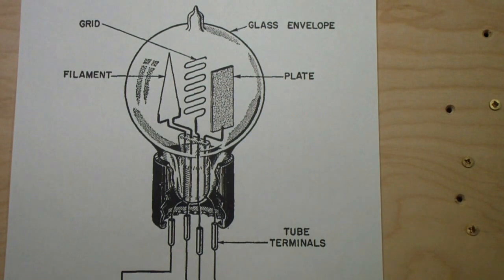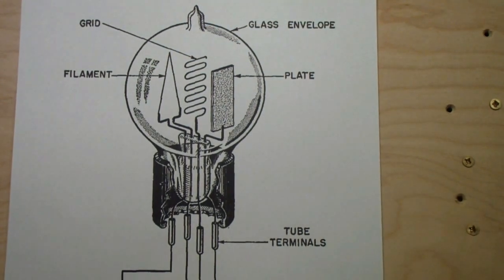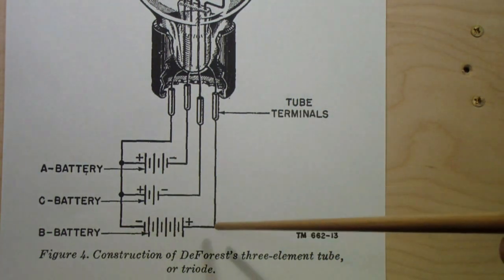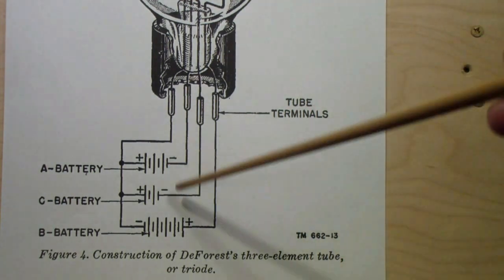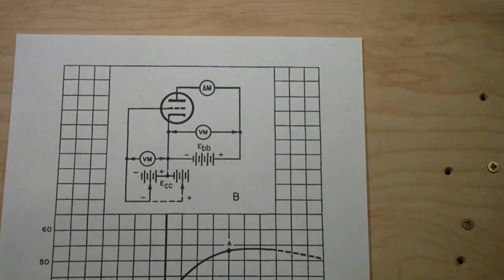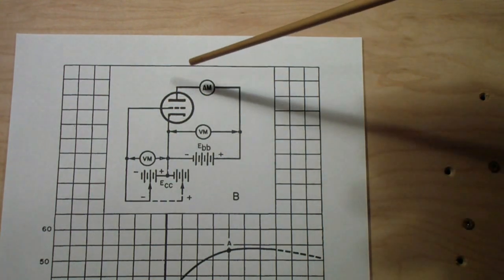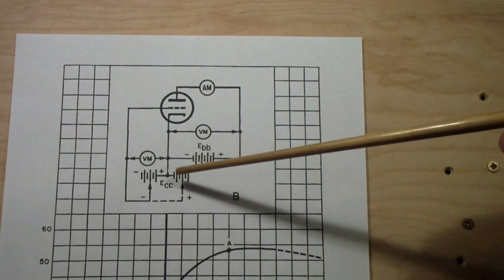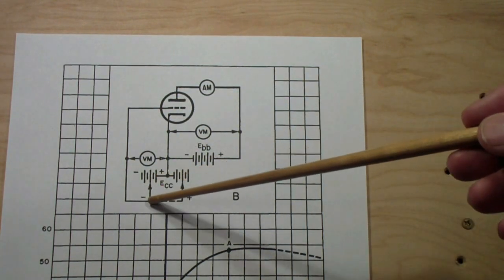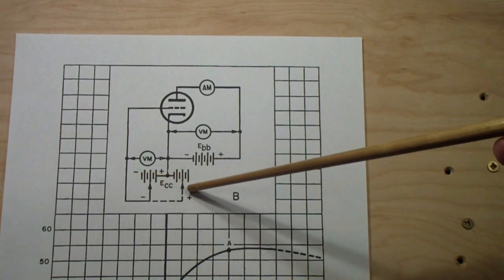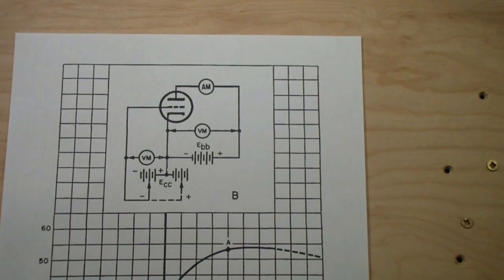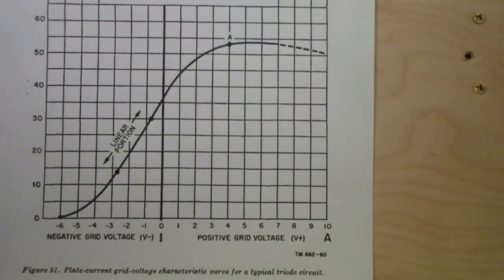This type of tube was called a triode, once again, because it's three electrodes. The battery used to supply the filament began to be called the A battery. The battery to supply the plate was called the B battery. So the battery to supply the grid was called the C battery. Later, this was called the bias battery.